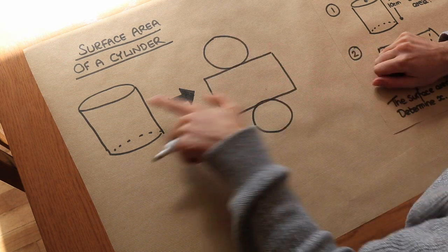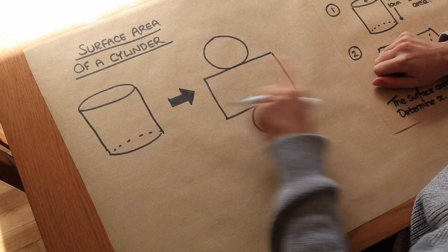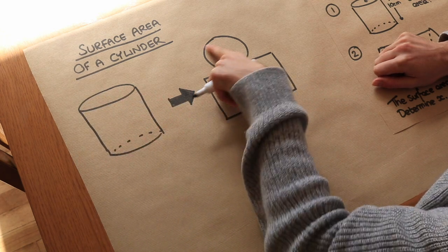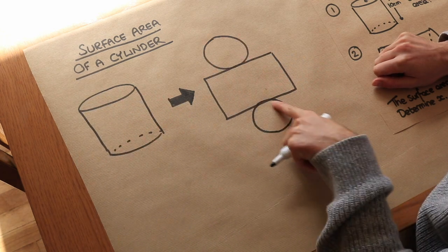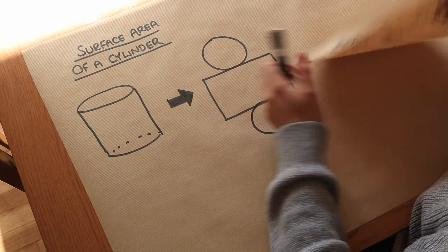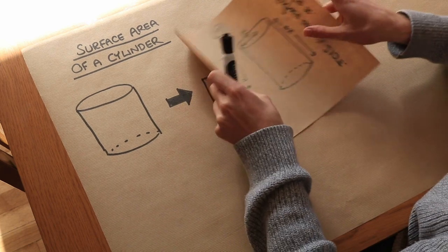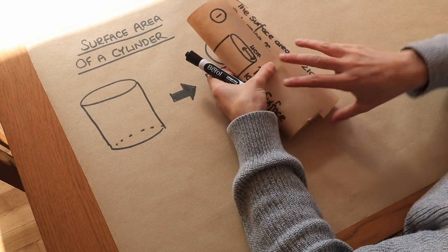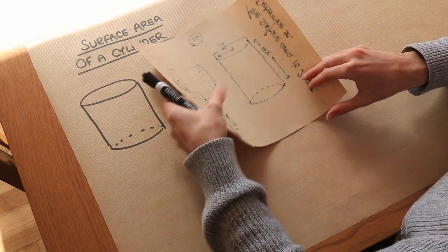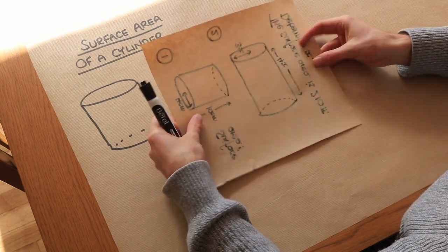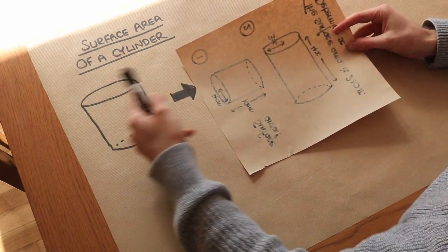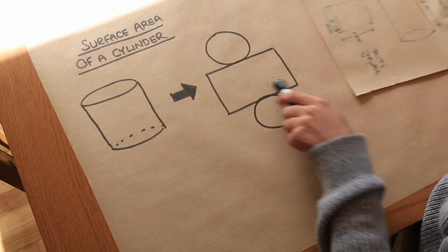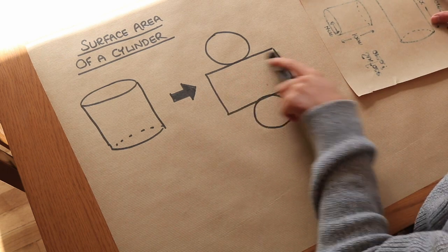This is the net of a cylinder. We can see that we've got the two circles at the top and the bottom. If we were to take a cylinder and make a cut here and fold it out, we could see that the curved surface area of the cylinder becomes a rectangle.